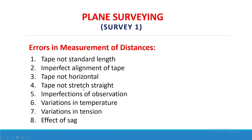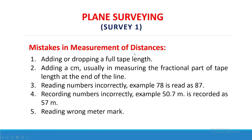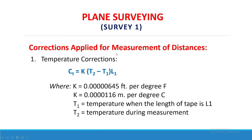Mistakes in measurement of distances: number one, adding or dropping a full tape length; number two, adding a centimeter usually in measuring the fractional part of tape length at the end of the line; number three, reading numbers incorrectly — for example, 78 is read as 87; number four, recording numbers incorrectly — for example, 50.7 meters recorded as 57 meters — and reading the wrong meter mark.